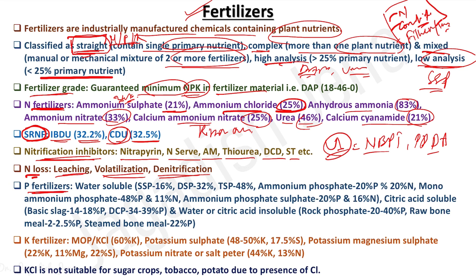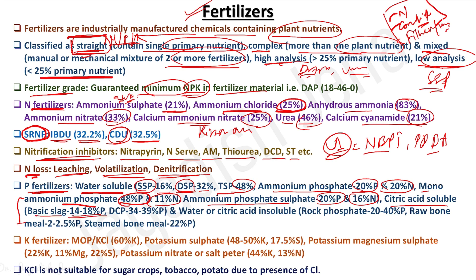Phosphatic fertilizers are classified as water-soluble, citric acid-soluble, or water and citric acid-insoluble. Water-soluble examples: SSP (16% P₂O₅), DSP/double super phosphate (32% P₂O₅), TSP (48% P₂O₅), ammonium phosphate (20% P, 20% N), MAP/mono ammonium phosphate (48% P, 11% N), ammonium phosphate sulfate (20% P, 16% N). Citric acid-soluble examples: basic slag (14–18% P₂O₅), dicalcium phosphate (34–39% P₂O₅).